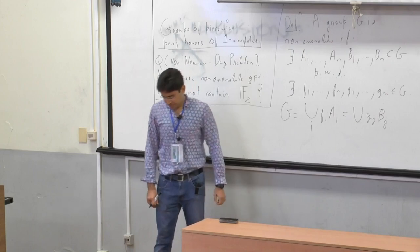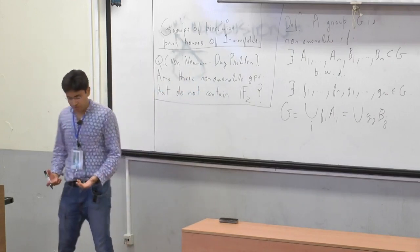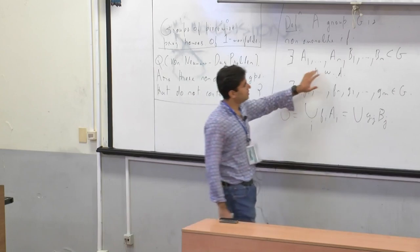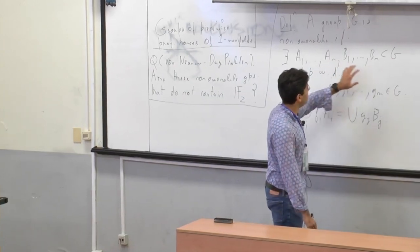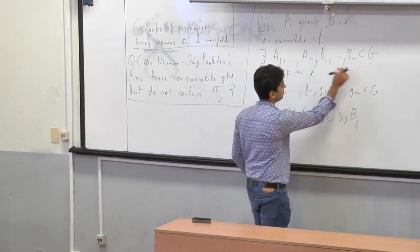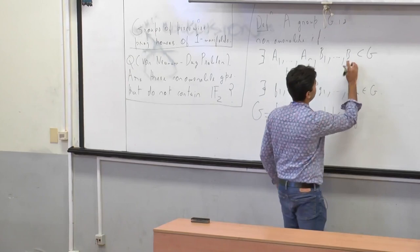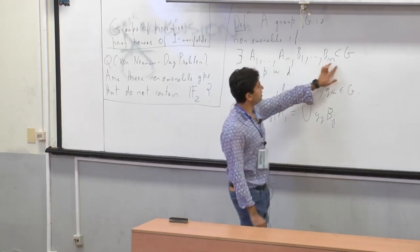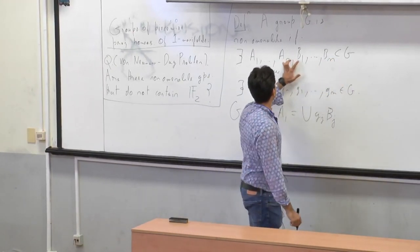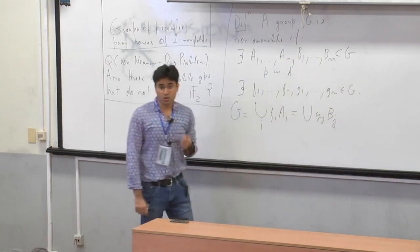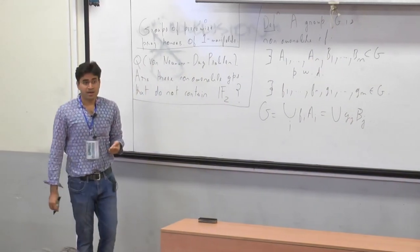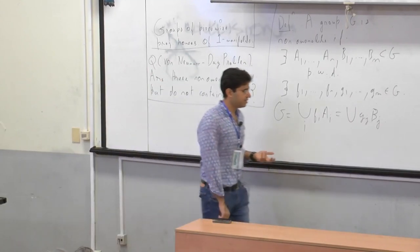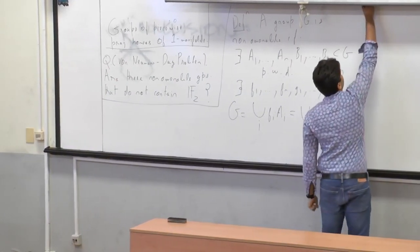This is the notion of non-amenability. The number of pieces in this decomposition is interesting — how many pieces do you need? What is the smallest number of pieces, n plus m, you need for a group G? This is the so-called Tarski number of the group. Very little is known about Tarski numbers of groups, and that's an interesting topic in itself.